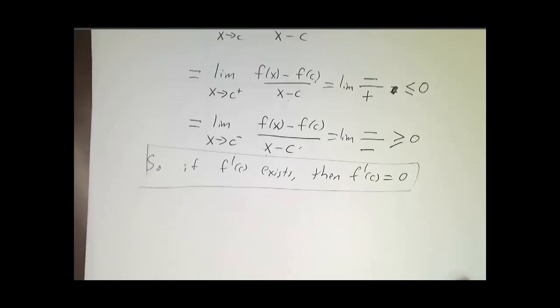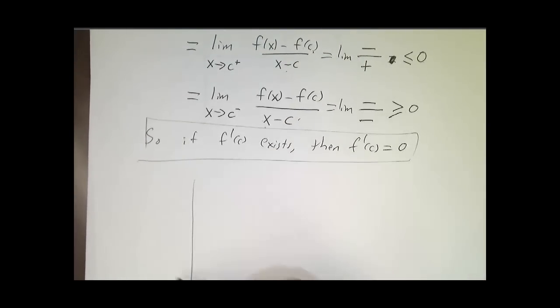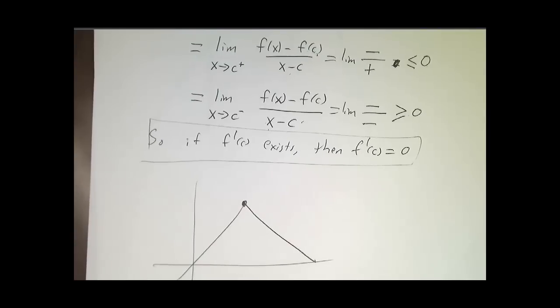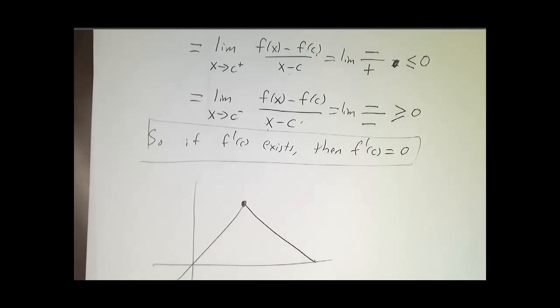Now, it might not exist. You can have a local maximum at a point where it hits a corner. There's no derivative here. That's fine.